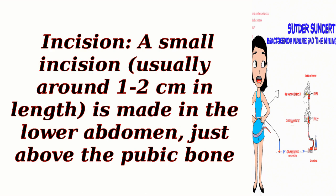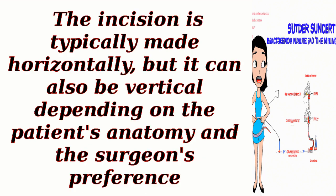Step 3: Incision. A small incision, usually around 1 to 2 centimeters in length, is made in the lower abdomen, just above the pubic bone. The incision is typically made horizontally, but it can also be vertical depending on the patient's anatomy and the surgeon's preference.